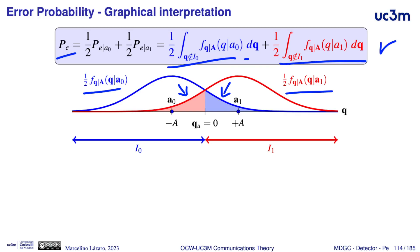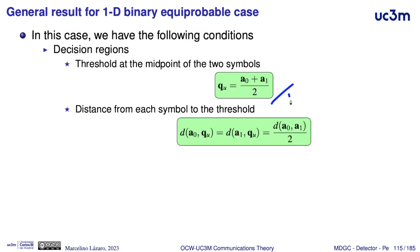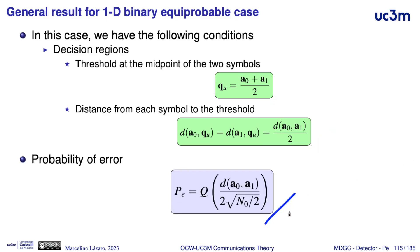The result obtained in this one-dimensional space can be extended for two symbols equiprobable with different coordinates, not necessarily minus A and plus A, because in any case the threshold defining the two decision regions will be at the midpoint between A0 and A1. The distance of each symbol to the threshold will be half of the distance between the two symbols. Therefore, the probability of error can be written in general as the Q function evaluated at half of the distance between the two symbols divided by the square root of N0. This is the general result for a one-dimensional binary equiprobable case.